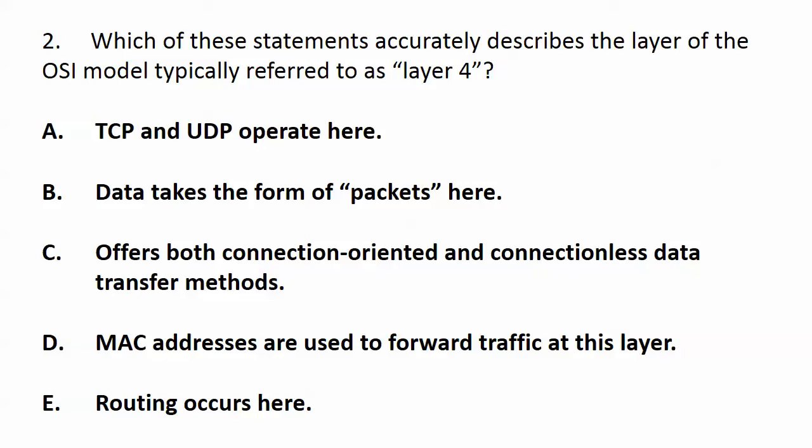For question two, statement A is definitely true because layer four is our transport layer, and that is where TCP and UDP operate. Statement B is false — data takes the form of packets at layer three; at layer four, they're data segments. Statement C is true: the connection-oriented and connectionless data transfer methods describe TCP and UDP respectively. Both D and E are false — MAC addresses and routing both belong at layer three, not layer four. So our true statements are A and C.